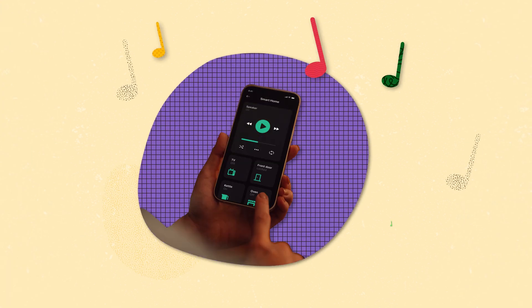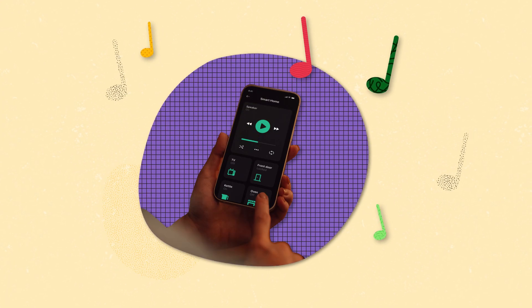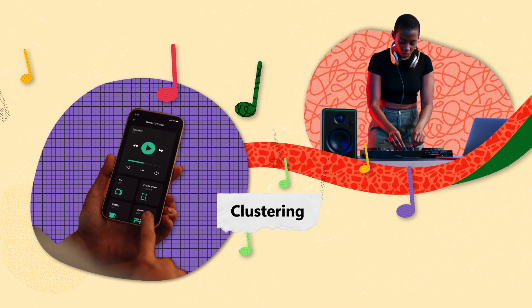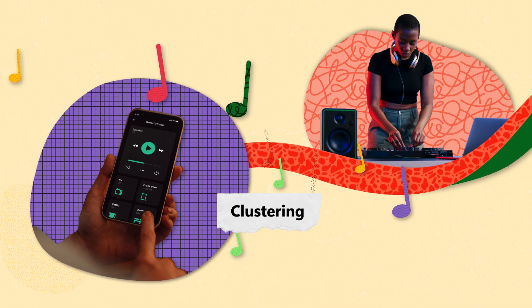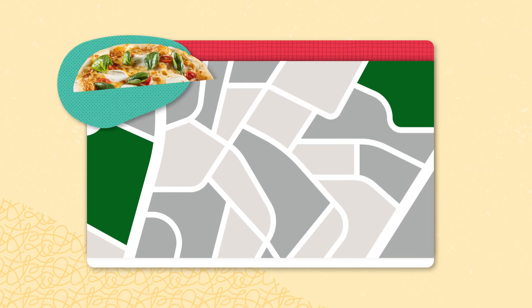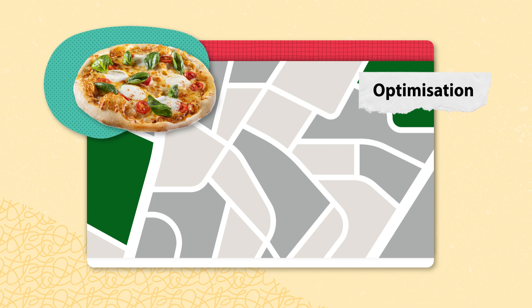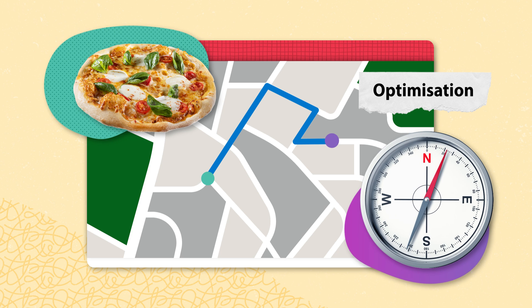Ever noticed how your favorite music app always knows just the right song to recommend? That is clustering at work. It is like a party planner, grouping together songs you like so it can suggest similar ones. And when you are hungry and waiting for your food delivery, an optimization algorithm is finding the quickest route to get your food to you — it is like a navigator, always searching for the best solution.